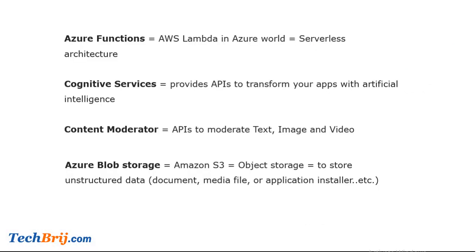If you are new, Azure Functions is like AWS Lambda in the Azure world, based on serverless architecture, meaning you execute code without worrying about hosting. Cognitive Services provides APIs to empower your application with artificial intelligence. It provides a Content Moderator API which is used to moderate text, image, and video to filter out offensive and adult content.